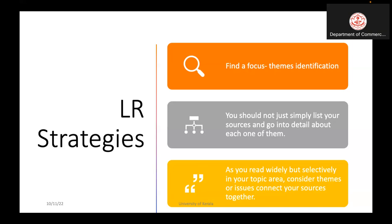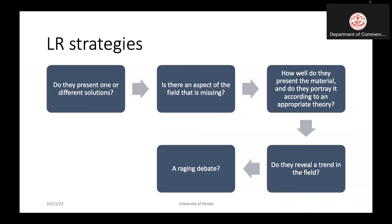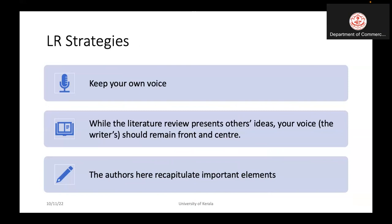The connected themes help you identify the research gap. There are strategies to consider: do existing works present different solutions? Sometimes some aspects are missing, and we have to identify those missing parts in the literature. We should consider how well we present existing theories, engage with ongoing debates on the issue, and find out the trends in the existing literature.